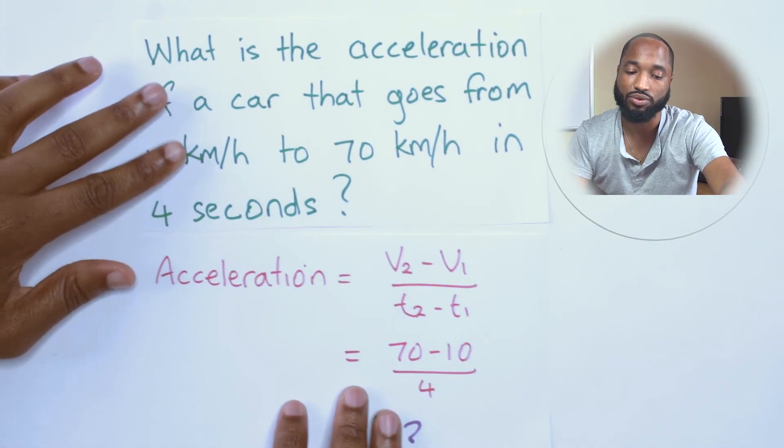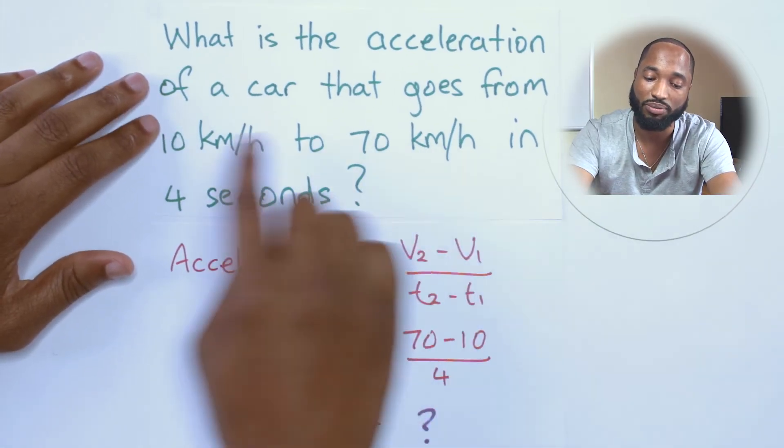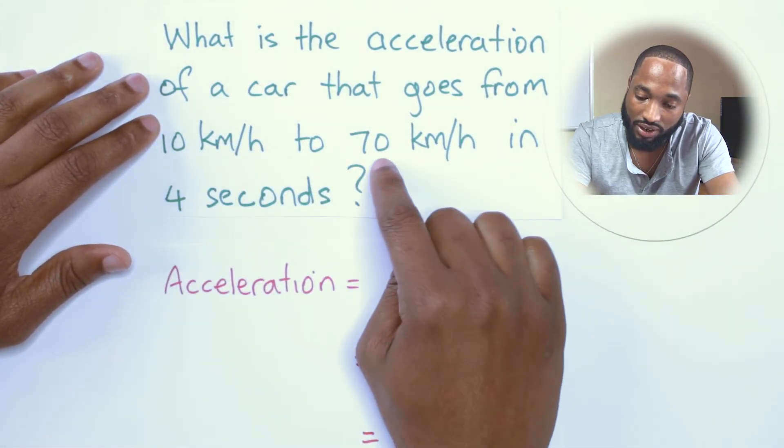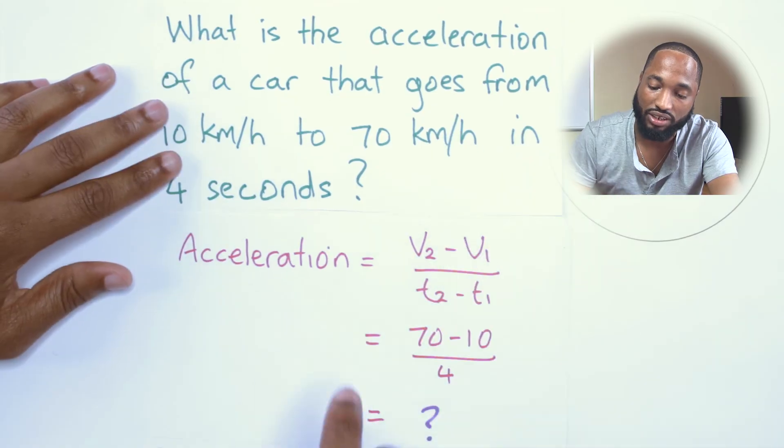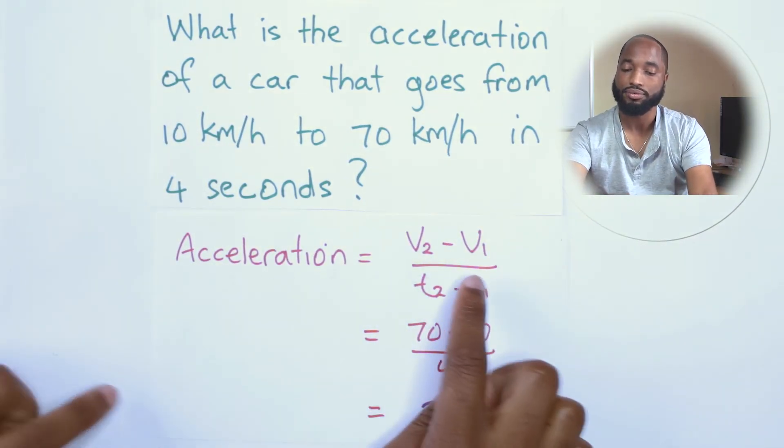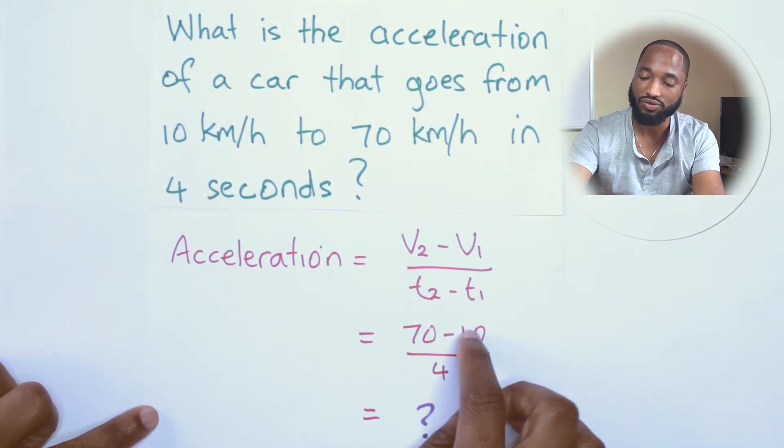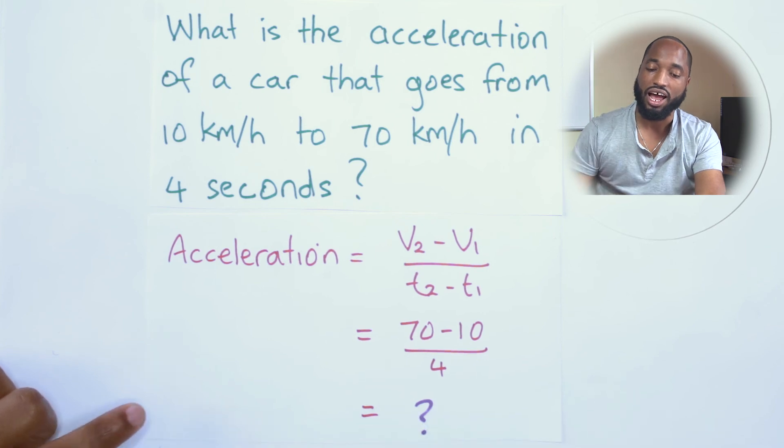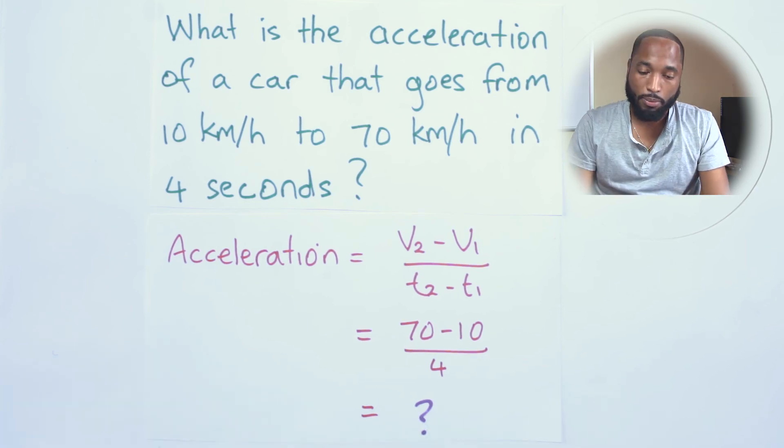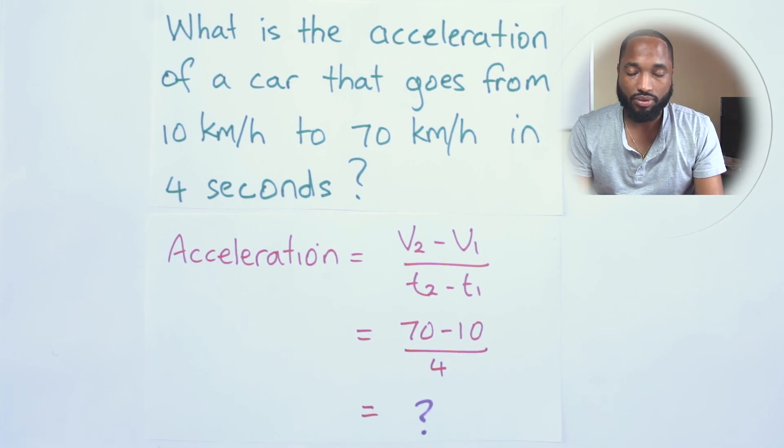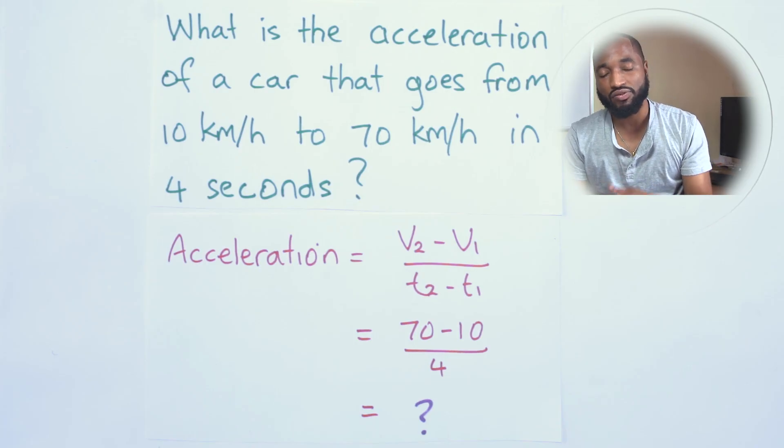One last thing: you can try this question. What is the acceleration of a car that goes from 10 kilometers per hour to 70 kilometers per hour in four seconds? Using the formula, substituting the values, see if you can figure out what's going on here and get the answer. Put the answer in the comments below if you have problems like this.